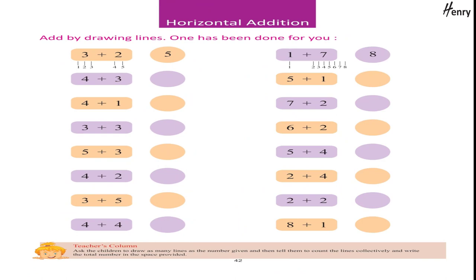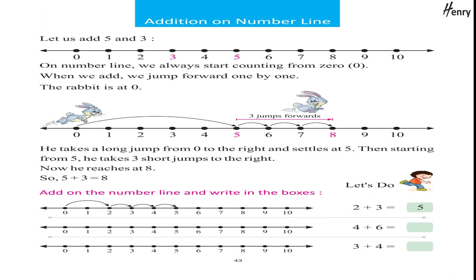Horizontal addition: add by drawing lines — one has been done for you. Addition on number line: let us add 5 and 3. On the number line, we always start counting from 0. When we add, we jump forward one by one. The rabbit is at 0. He takes a long jump from 0 to the right and settles at 5. Then starting from 5, he takes three short jumps to the right. Now he reaches at 8. So, 5 plus 3 equals 8. Let's do: add on number line and write in the boxes.